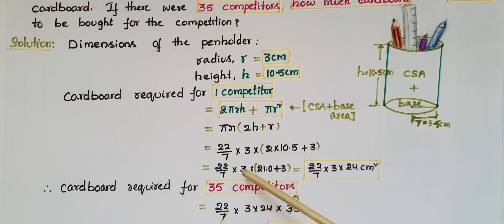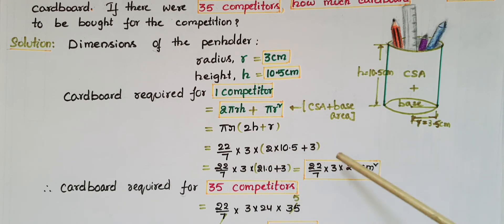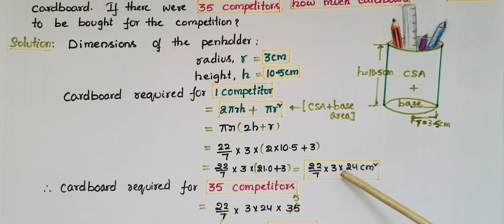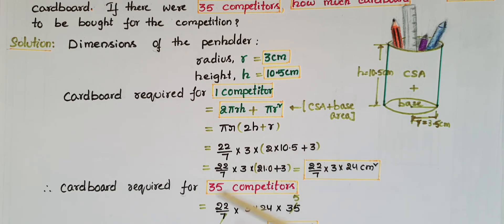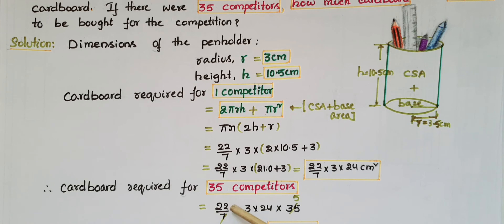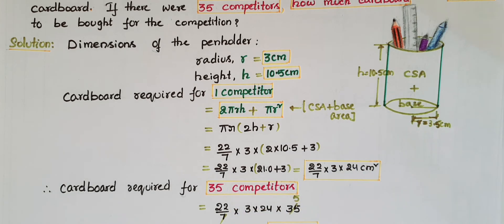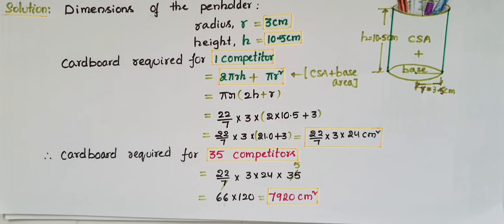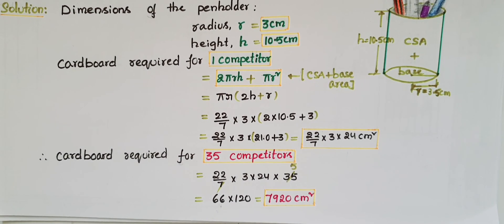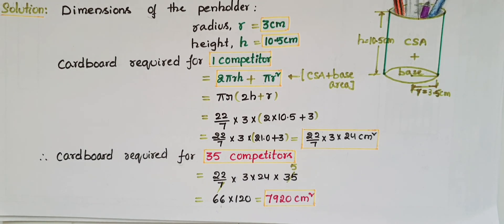That equals 22/7 into 3 into (21 + 3), which equals 22/7 into 3 into 24 centimeter square. Now, cardboard required for 35 competitors to make 35 pen holders is 22/7 into 3 into 24 into 35, which equals 66 into 120, giving us 7920 centimeter square.